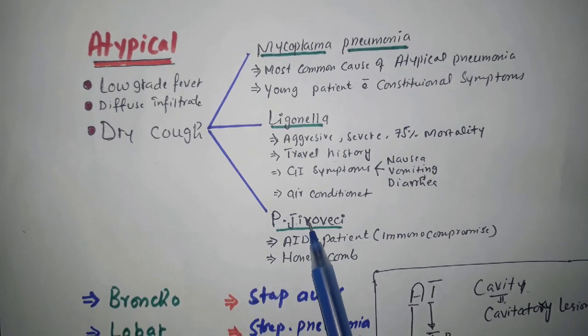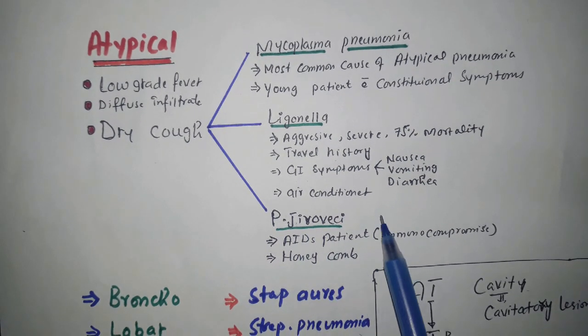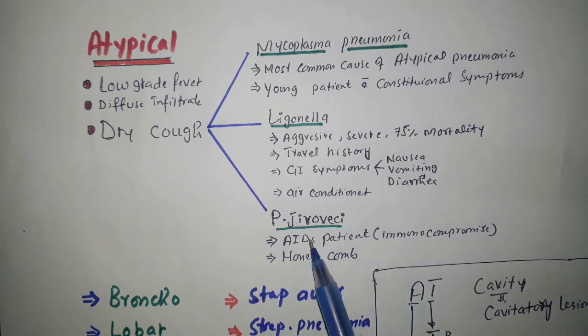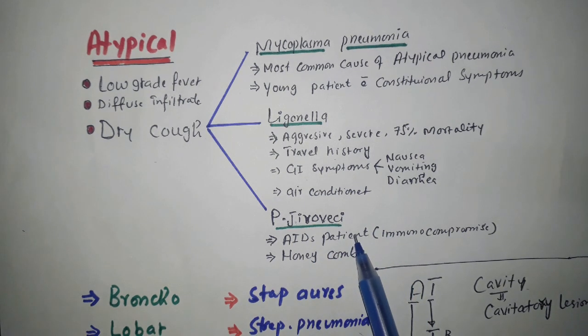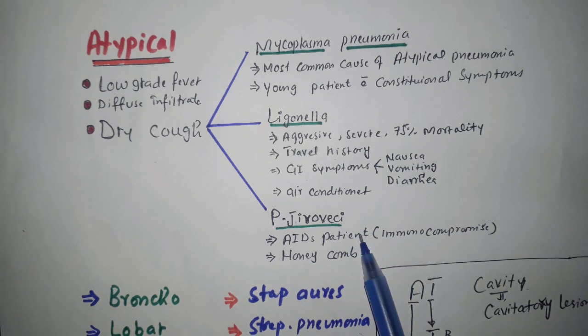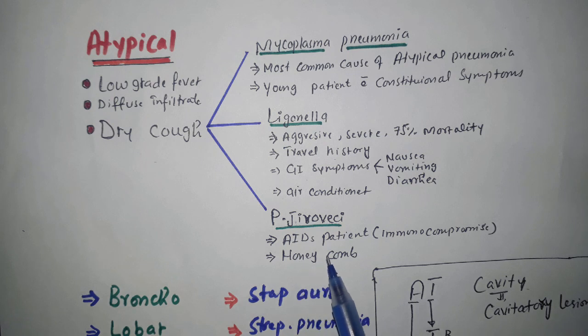Pneumocystis jirovecii occurs in immunocompromised patients, or when the CD4 count is less than 200. There will be a honeycomb kind of appearance on X-ray.